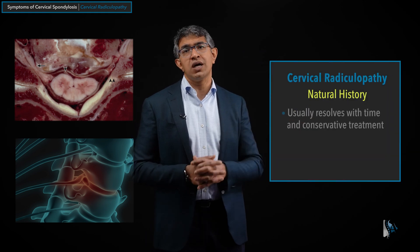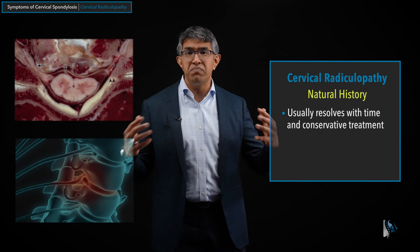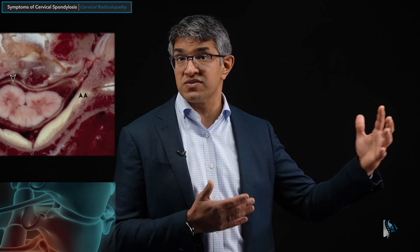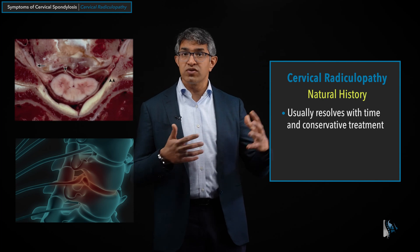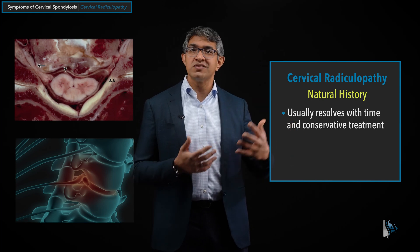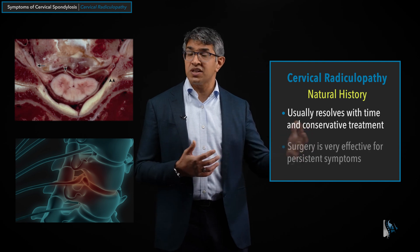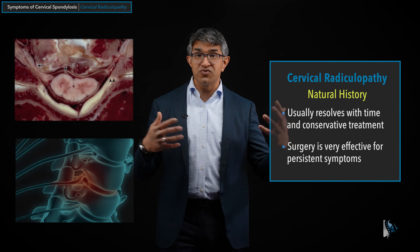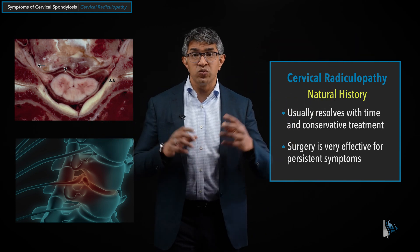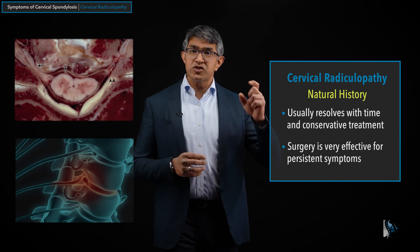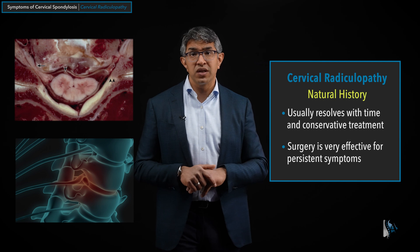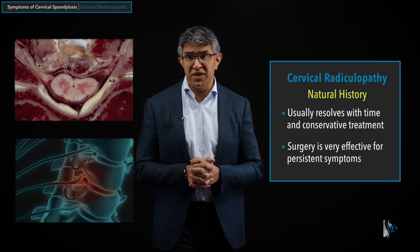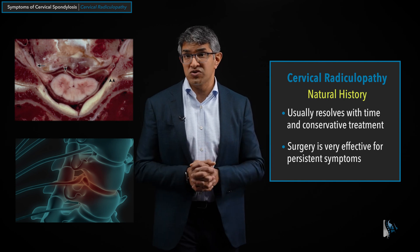Cervical radiculopathy differs significantly from cervical myelopathy. Its natural history is usually self-limited — it typically gets better with conservative treatment over time. We'll try injections, physical therapy, maybe chiropractic care. If it does not improve conservatively, it tends to respond very well to surgery. There are different surgical options we'll cover in subsequent chapters. As a rule, radiculopathy does tend to improve with time, so we generally encourage patients to try non-surgical options before proceeding with surgery.